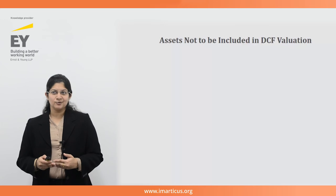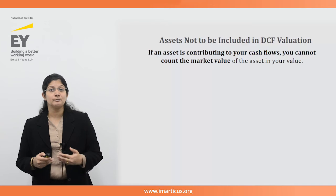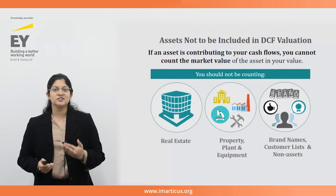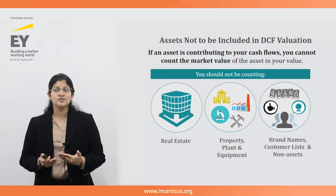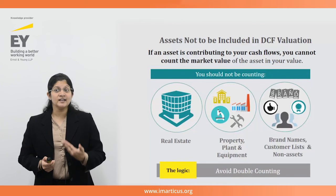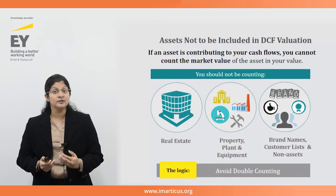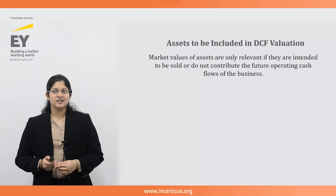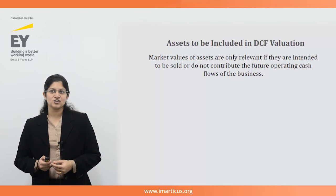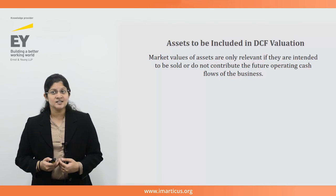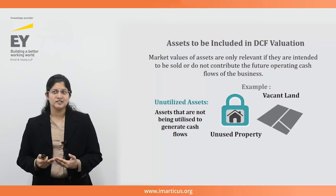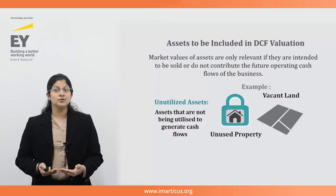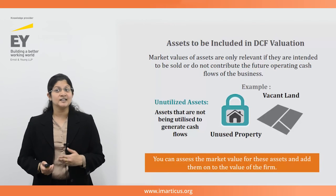Now let's look at the assets that should not be counted in the income approach. If an asset is contributing to your cash flows, you cannot also count its market value. Thus, you should not count the real estate on which your offices stand, the property, plant and equipment representing your factories and other productive assets, any values attached to brand names or customer lists, and definitely not non-assets such as goodwill. The logic is that the benefit of these assets is already incorporated into your cash flows — adding their market value would double-count them. Market values of assets are only relevant if they are intended to be sold or do not contribute to future operating cash flows. Assets you can add on to your DCF valuation are unutilized assets — for example, vacant land that is not being used to generate cash flows can be separately assessed and added to the firm value.